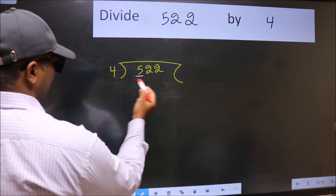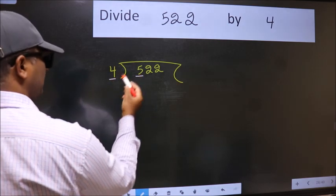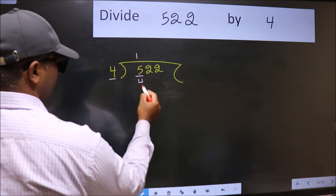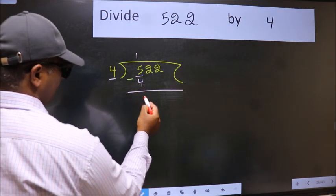Here we have 5, and here 4. A number close to 5 in the 4 table is 4 once 4. Now we subtract. We get 1.